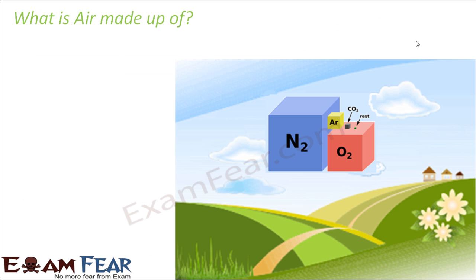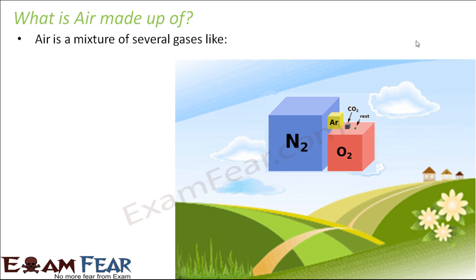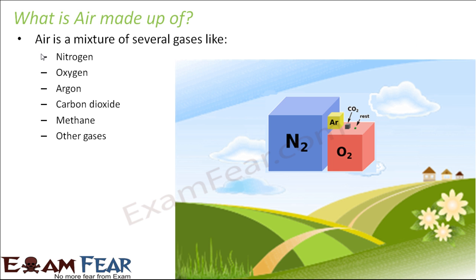Now before we talk about how air pollution happens and how it can be controlled, we should first know what air is — what air is made up of. Because air also contains gases, so how do we know which gas should be present in the air and which gas is the extra unwanted thing? For that we should know the composition of air. Air is a mixture of several gases: nitrogen, oxygen, argon, carbon dioxide, methane, and small amounts of some other gases.